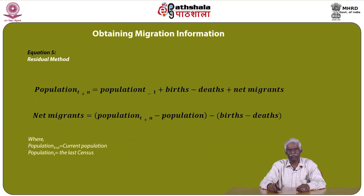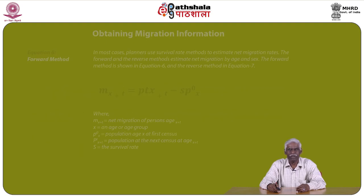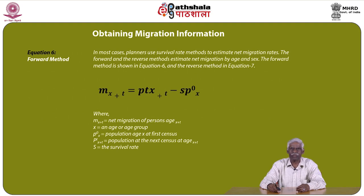The residual method equation (Equation 5) is: population at (t+n) equals population at t minus 1, plus births minus deaths plus net migrants. Therefore, net migrants equals population at (t+n) minus population at t, minus births minus deaths, where population at (t+n) is the current population and population at t refers to the last census population. In most cases, planners use survival rate methods to estimate net migration rates.